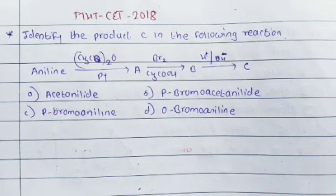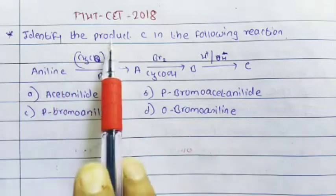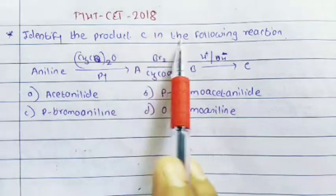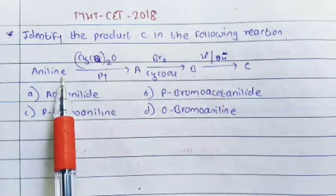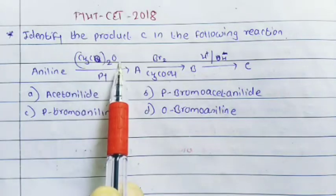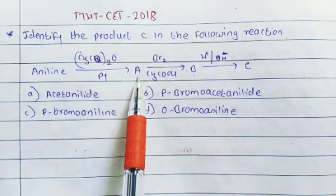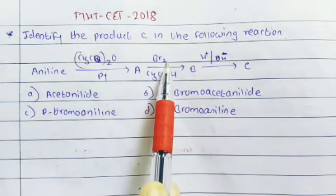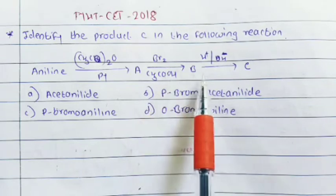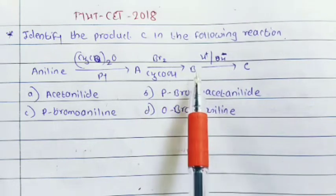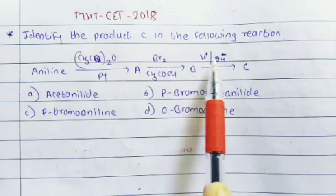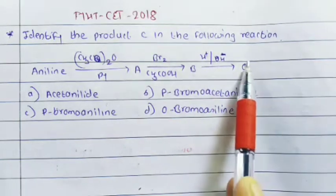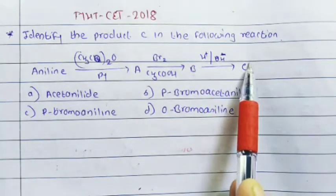Good morning students. Today's first question: identify product C in the following reaction. Aniline in presence of acetic anhydride gives A. A on bromination in presence of acetic acid gives B. B on hydrolysis in presence of acid or base gives C. Identify product C.